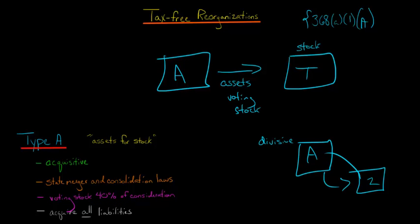What is consideration? Consideration is just what you're giving to the target. You're giving assets and stock. So 60% could be cash, it could be whatever, but at least 40% has to be voting stock. That's pretty flexible, and you'll see as we talk about the different types of reorganizations.